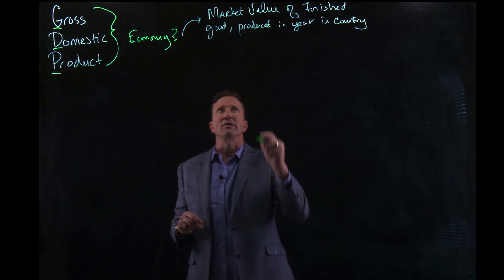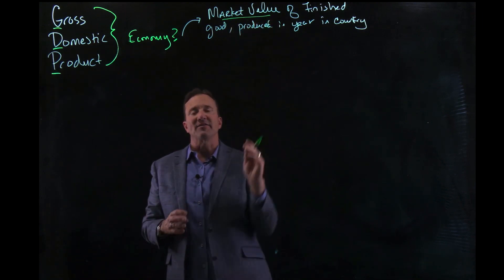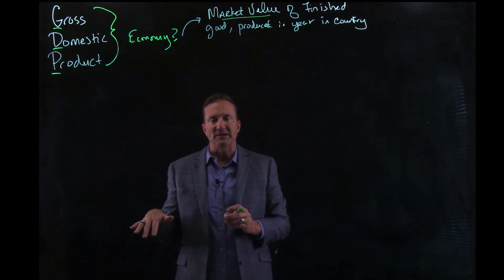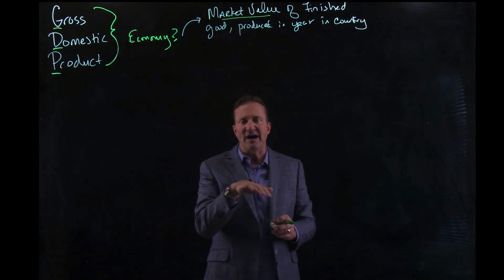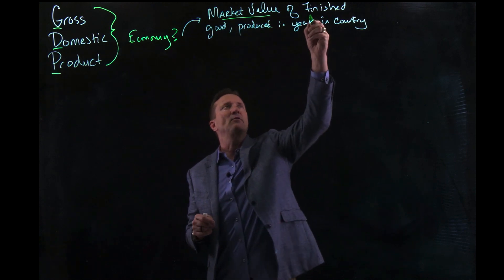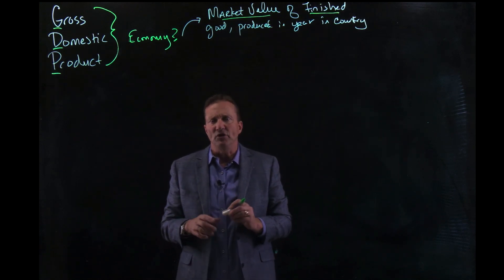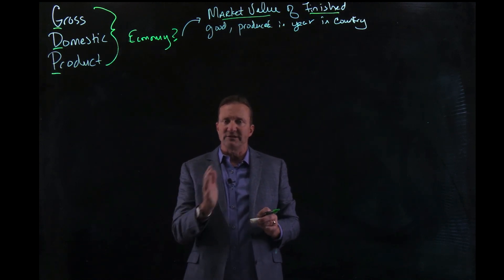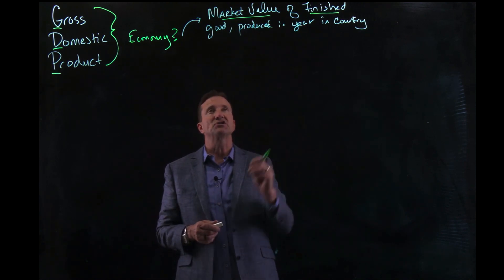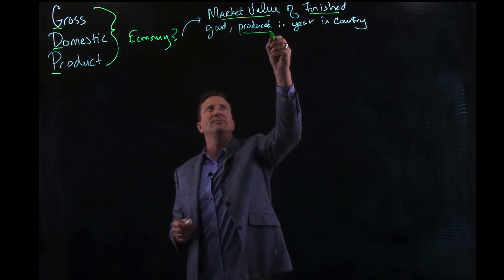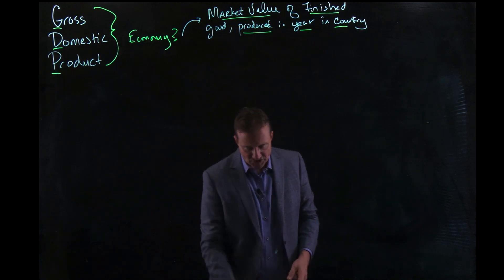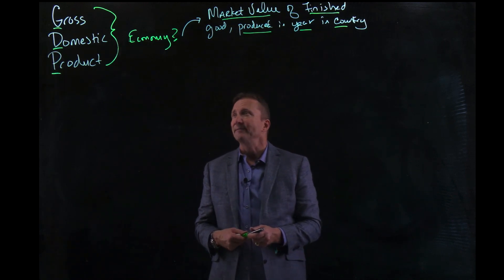Underlining a few key words — market value: prices change. Prices were lower in the past and today prices move higher. The other key term is finished goods. If you produce a product and it doesn't make it to its final destination, then it's not a finished good. We want to track finished goods, and they need to be produced in a year and in our country.